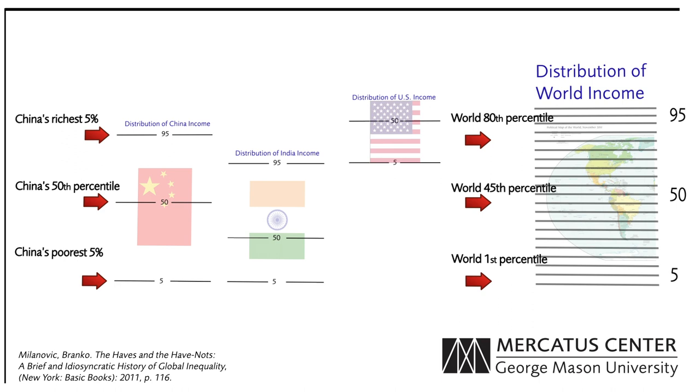If the global income distribution were closer to that of the United States and other wealthy industrialized nations, the lot of the world's poor would be significantly better.